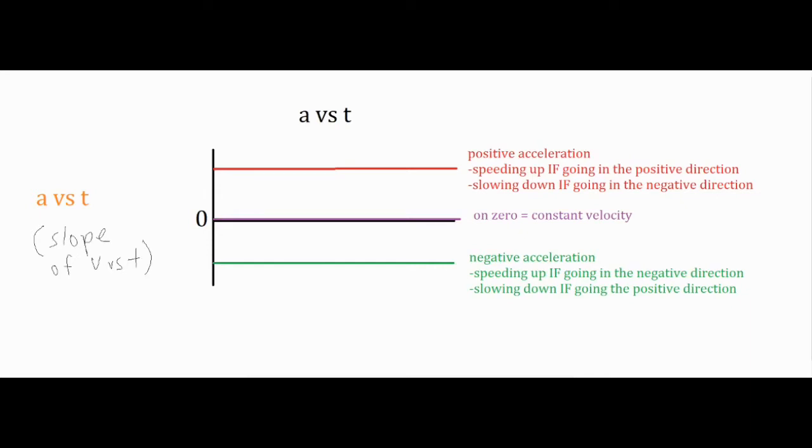From there we have three different areas where the line could fall. If it is right on zero, right on your x-axis, that means there is no acceleration. That doesn't mean the object isn't moving. It could be moving really quickly or slowly. It just tells us that there is no change in velocity, therefore it is constant velocity.